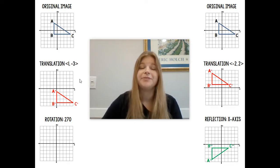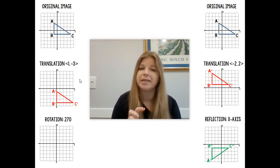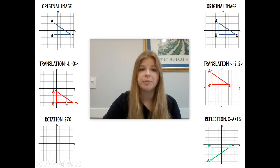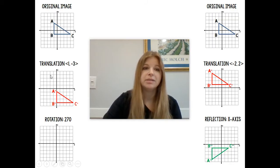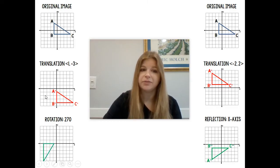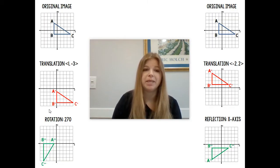Then, if I wanted to rotate this figure 270 degrees — remember, rotating 270 degrees is like rotating 90 degrees and 180, or 180 and then 90 — but coordinate-wise it's (y, negative x). So if I look at each of the new ordered pairs for A prime, B prime, and C prime and apply (y, negative x), it would rotate the figure from the 4th quadrant through the 1st and 2nd and into the 3rd, landing here. So A double prime, B double prime, and C double prime end up in this position.